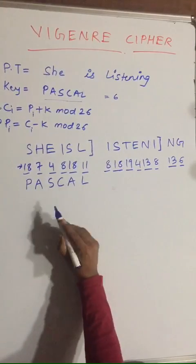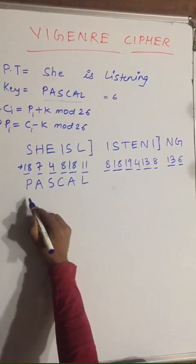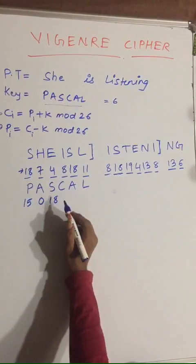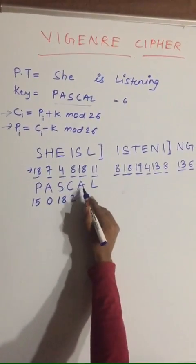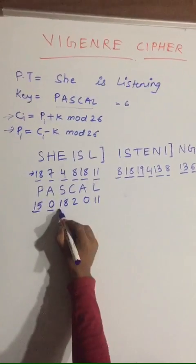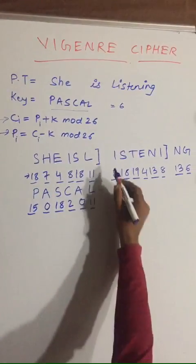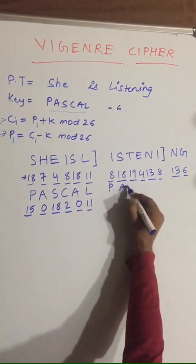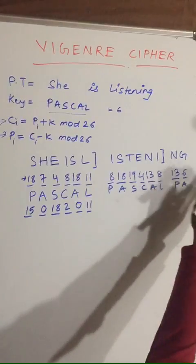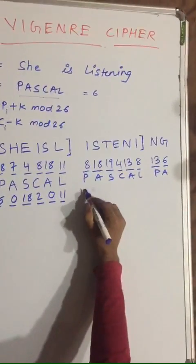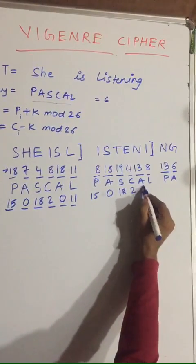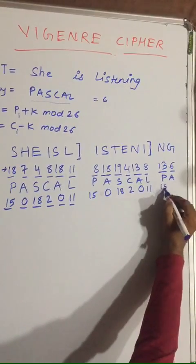Now write the corresponding numeric values of the key 'PASCAL' below the plaintext blocks. P=15, A=0, S=18, C=2, A=0, L=11. You repeat the key for each block, so write PASCAL again, and for the last partial block write P-A only, giving values 15, 0, 18, 2, 0, 11 and then 15, 0.